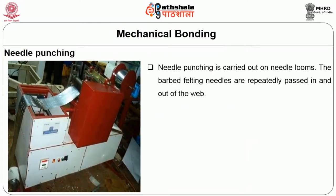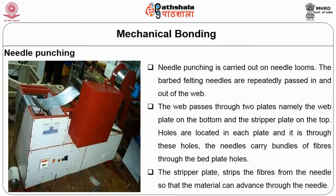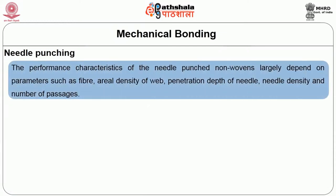Needle punching is carried out on needle looms. The barbed felting needles are repeatedly passed in and out of the web. The web passes through two plates: the bed plate on the bottom and the stripper plate on the top. Holes are located in each plate, and it is through these holes that the needles carry bundles of fibers through the bed plate holes. The stripper plate strips the fibers from the needle so that the material can advance through the needle loom. Performance characteristics of needle-punched non-wovens largely depend on parameters such as fiber type, aerial density of web, penetration depth of needle, needle density, and number of passages.